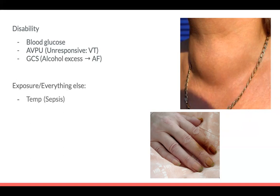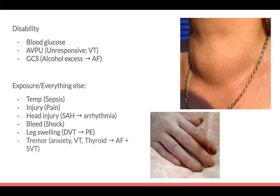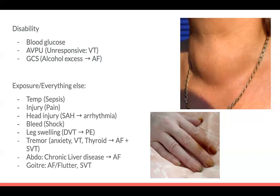E for exposure: check for temperature and sepsis, which can predispose to AF. Pain can cause sinus tachycardia; subarachnoid haemorrhages are known to cause arrhythmias and ST changes in VT. A bleed can cause shock. Leg swelling could be a DVT and may indicate an underlying PE. Tremor — anxiety can cause tremor and tachycardia; a hyperthyroid picture can lead to AF or SVT. In the abdomen, look for signs of chronic liver disease as a predisposition to AF, and check for a goitre.